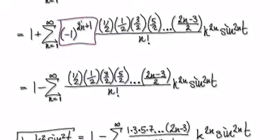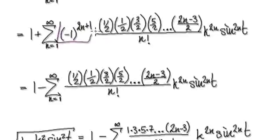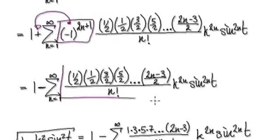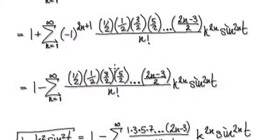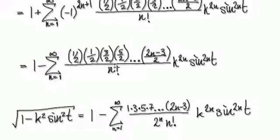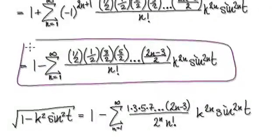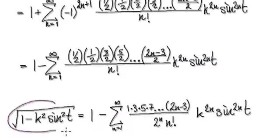If you look at this, this thing here will always be an even number. When you combine it with the 1, it will always be an odd number. So negative 1 to the power of an odd number will always be a negative. You can take this out, and then it will become this — everything will be nice and clean inside here.